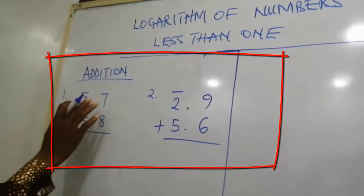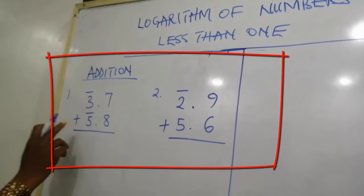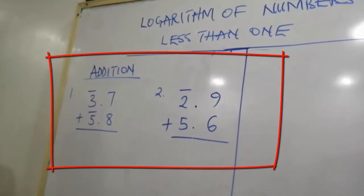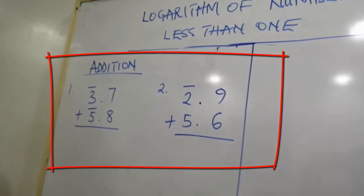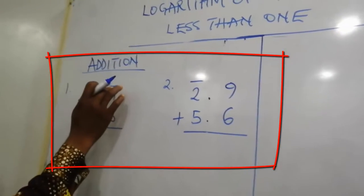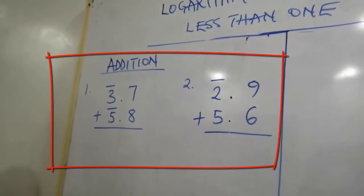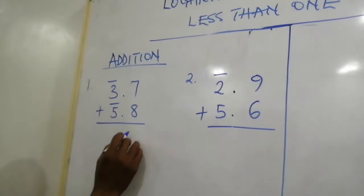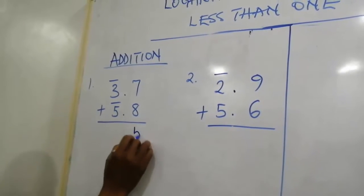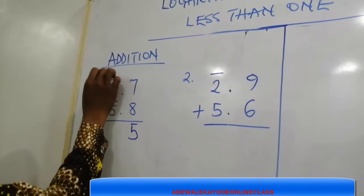For example, we have bar 3.7 plus bar 5.8 and we want to add this together. Add 7 and 8, that will give us 15. What are we writing? We are going to write 5 and take the 1 here.